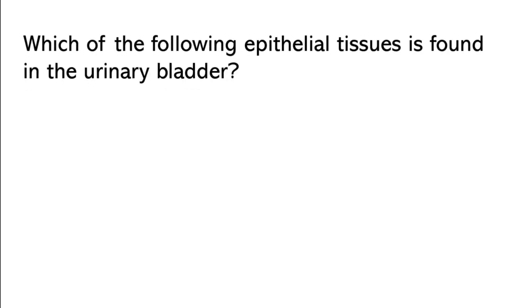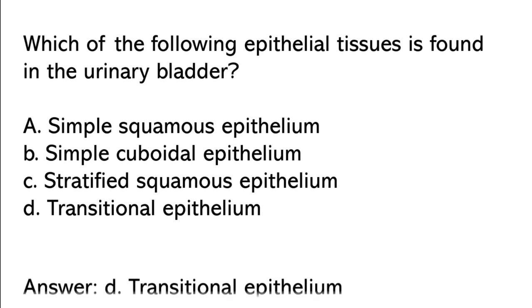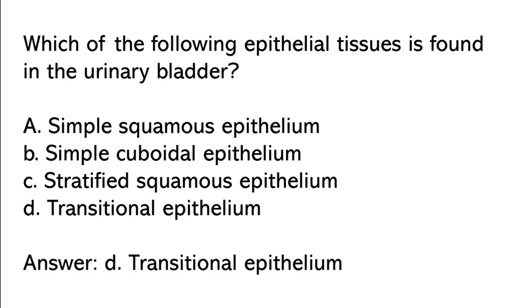Which of the following epithelial tissue is found in the urinary bladder? Simple squamous epithelium, simple cuboidal epithelium, stratified squamous epithelium, transitional epithelium. So the correct answer is option D: Transitional epithelium.